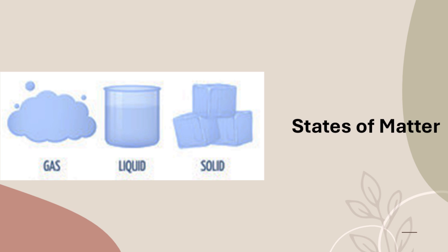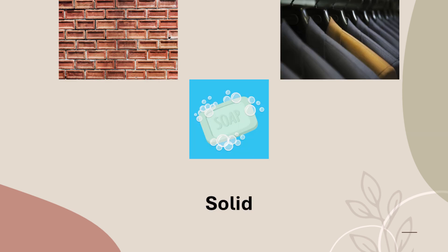There are three states of matter. Matter exists in three forms: solid, liquid, and gas. Water exists naturally in all of these states. Other than water, all other matter is in one of the states, but water exists in all three states — we will see how going forward.